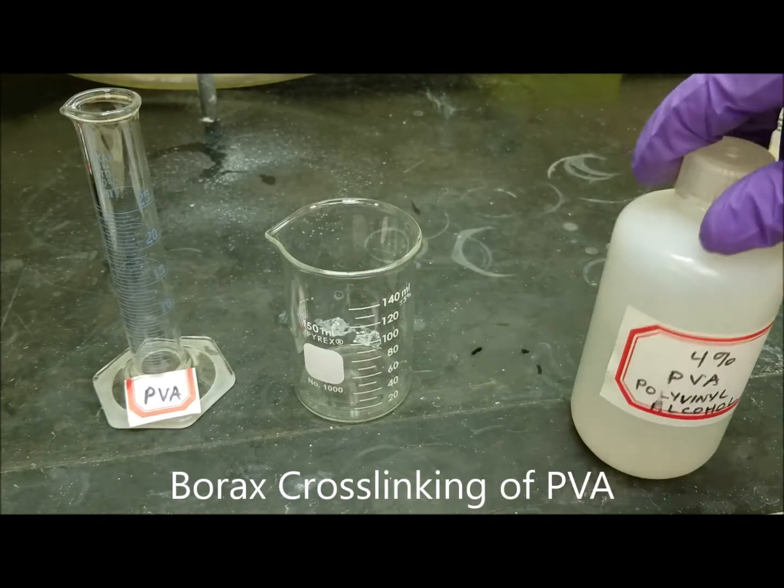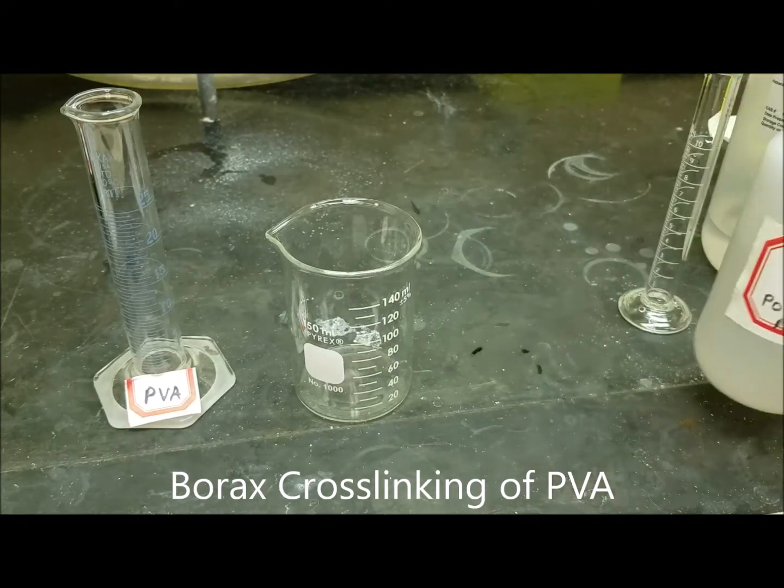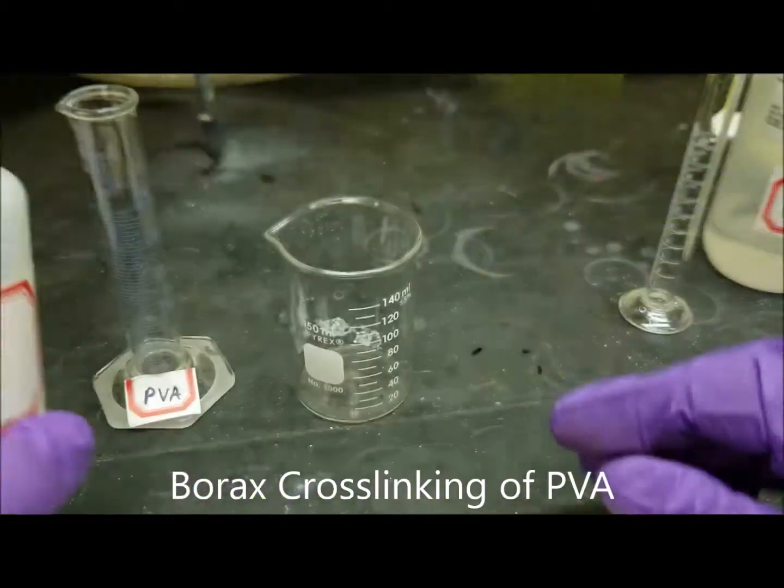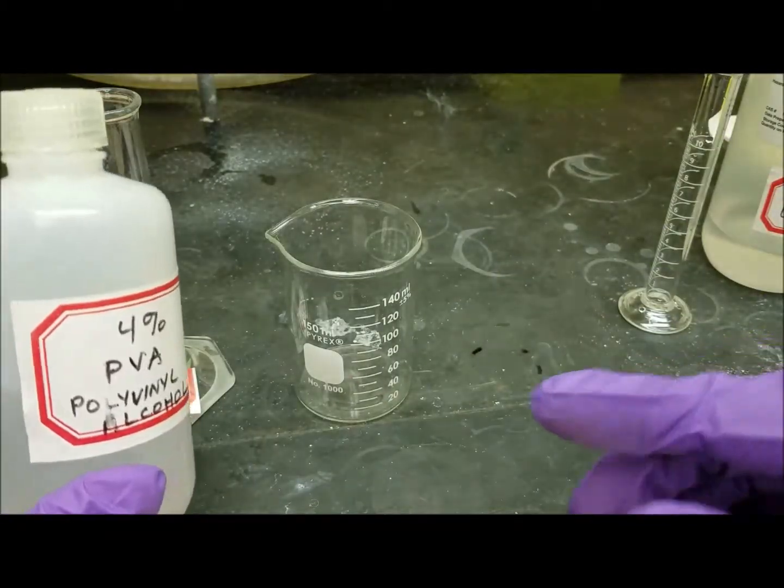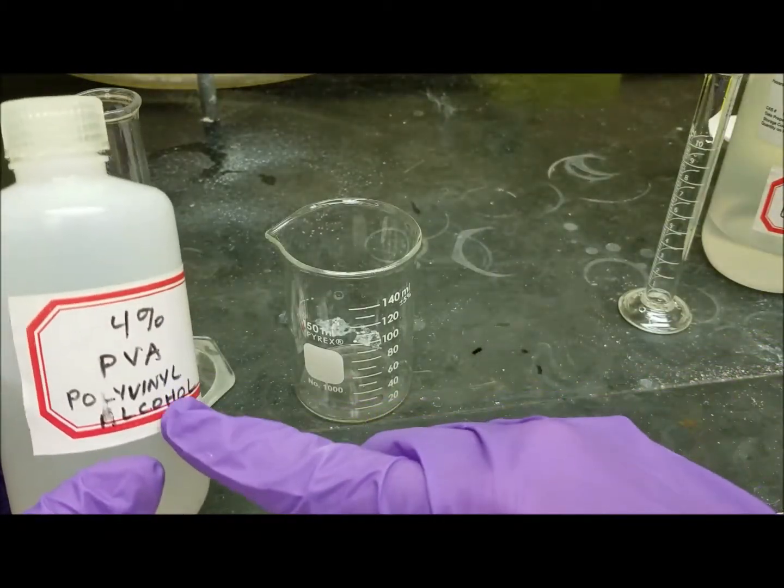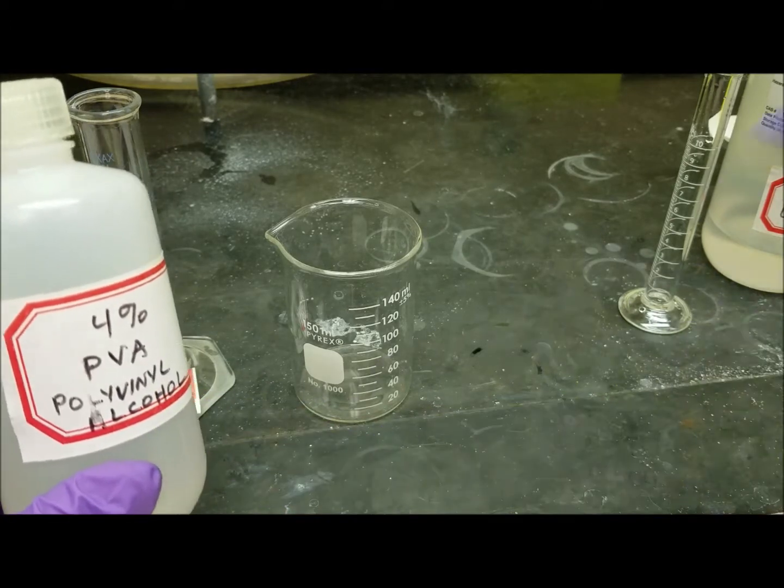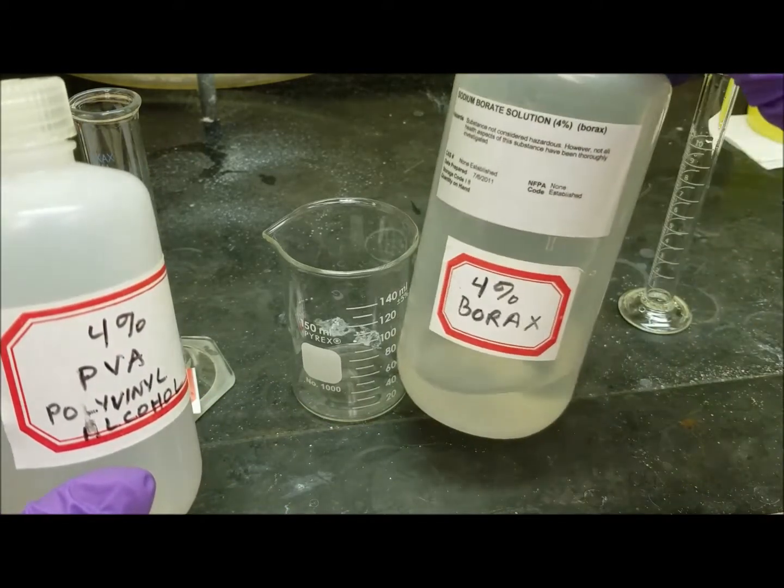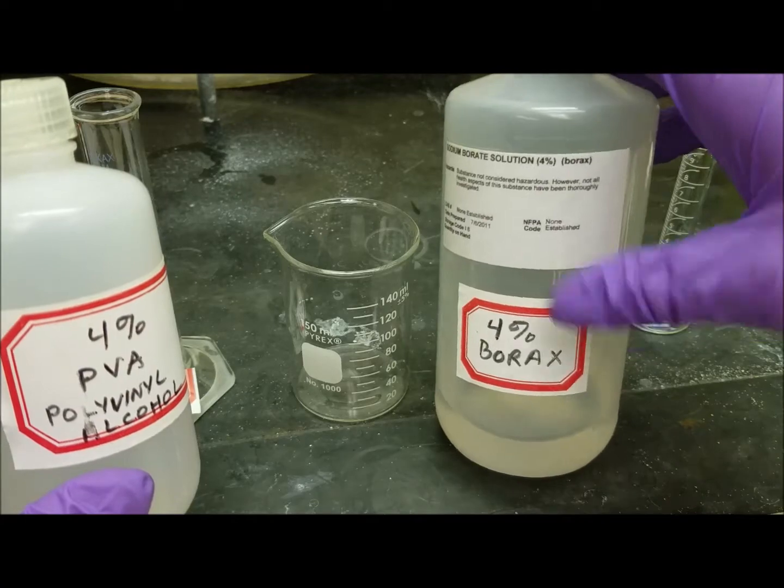Here's the last little bit for this experiment and this is the preparation of a cross-linked polymer of, basically it's polyvinyl alcohol is our polymer and we're going to cross-link it with sodium borate, also known as borax.